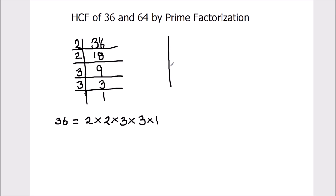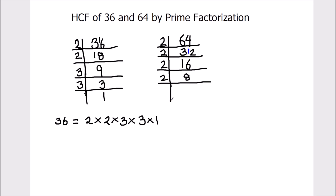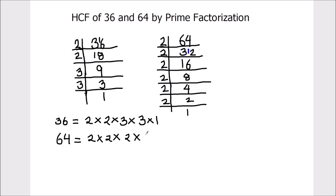Now let's find the prime factors of number 64. 64 is also an even number, it is easily divisible by the first prime number 2. Continuing to divide by 2: 64 ÷ 2 = 32, 32 ÷ 2 = 16, 16 ÷ 2 = 8, 8 ÷ 2 = 4, 4 ÷ 2 = 2, 2 ÷ 2 = 1. So the prime factors of 64 are 2 times 2 times 2 times 2 times 2 times 2.